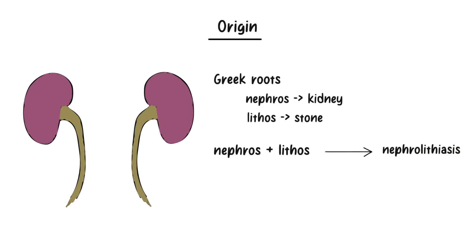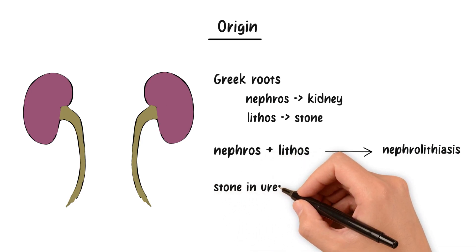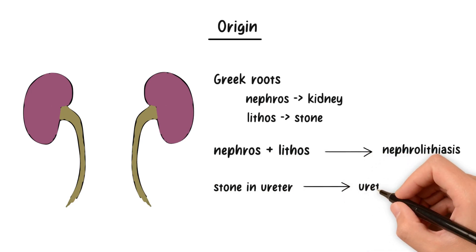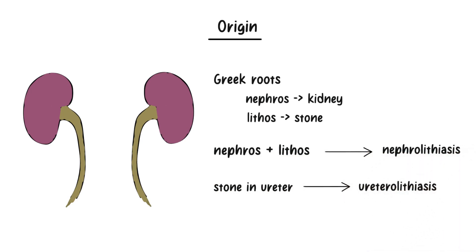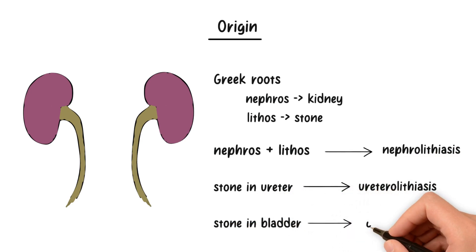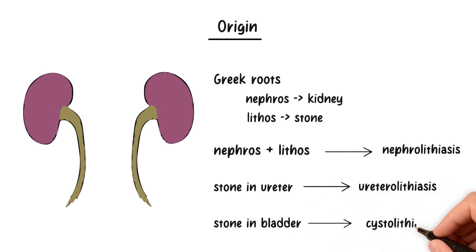Sometimes these stones don't stay put. When a stone finds its way to the ureter — the tube connecting the kidney and the bladder — we refer to it as ureterolithiasis. And if it ends up in the bladder, that's called cystolithiasis. These terms may sound complicated, but when broken down, they simply pinpoint the location of the stone in our urinary system.